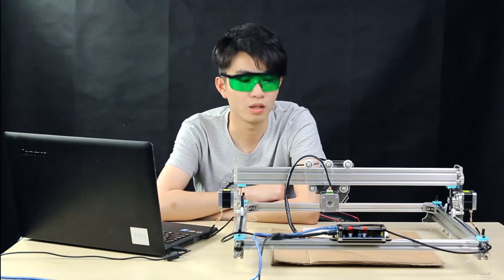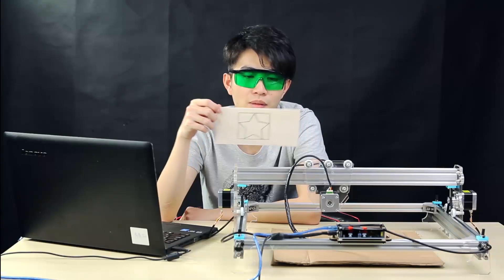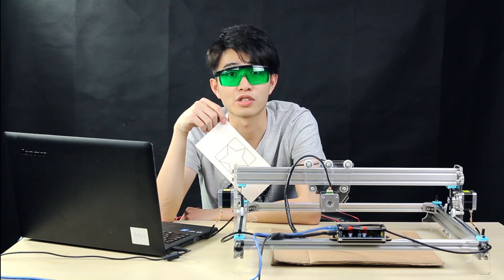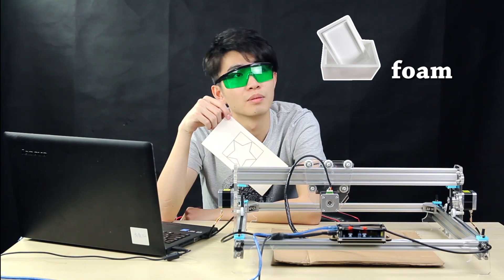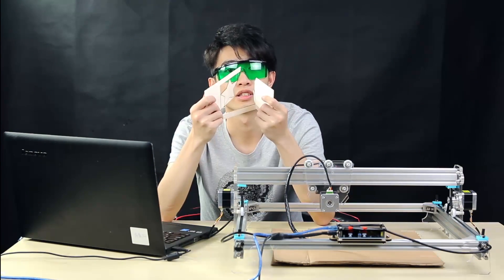As you know, the machine can cut some light materials such as foam, paper, and balsa wood.